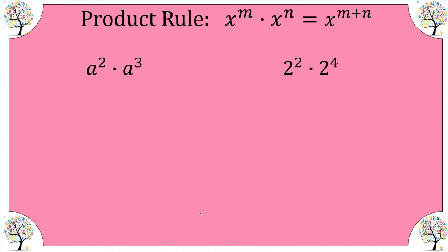The product rule — write this in your notes — is when you are multiplying with like powers, meaning our bases are the same, you can simplify those by adding the exponents. Let's show why that is.